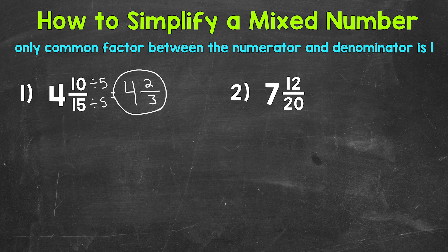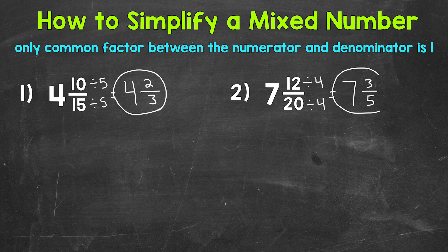What can we divide both 12 and 20 by? Well, 4. Let's divide them both by 4. And this is going to give us 7. 12 divided by 4 is 3. And 20 divided by 4 is 5. So we get 7 and 3 fifths. The only common factor between 3 and 5 is 1. So the fractional part is in simplest form.